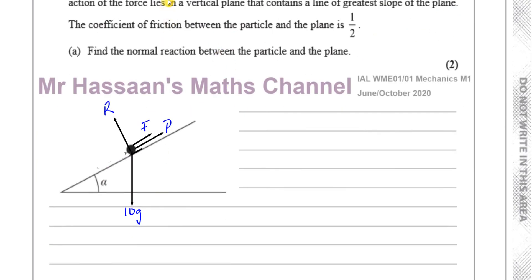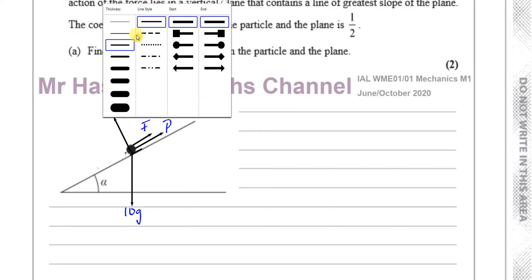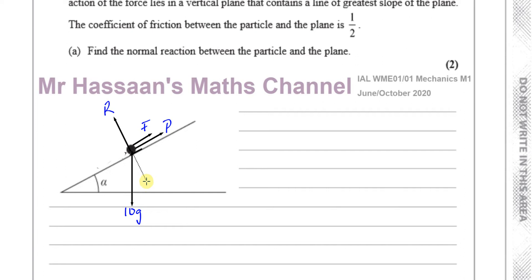We've got to resolve the forces parallel and perpendicular to the plane. This angle is alpha — that's because of similar triangles. The big triangle has angle alpha and a right angle, and the small triangle shares one angle with the big triangle and also has a right angle, so by similarity this angle must also be alpha.